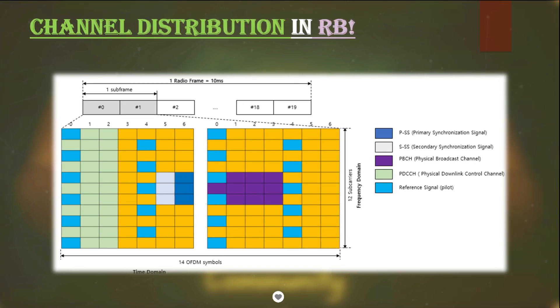These resource blocks are distributed among the different types of logical signals, control signals and shared channels, like you can see the PSS—Primary Synchronization Signal—and SSS—Secondary Synchronization Signal—and PBCH—Physical Broadcast Channel. These are being used for the initial access procedures, as PSS and SSS are being used for the cell search procedures and identification, radio frame timing information, etc. MIB—Master Information Block—is carried through the PBCH channel, which is required for UE to access the network.